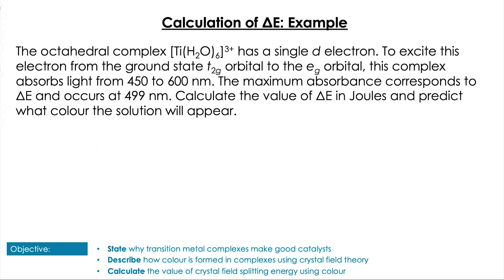How do we go about doing it? Well, we know that delta E equals hf, and we know that f equals c over lambda, where h is Planck's constant, c is the speed of light, lambda is the wavelength absorbed, and f is the frequency. So once we know the wavelength, we're able to calculate delta E.